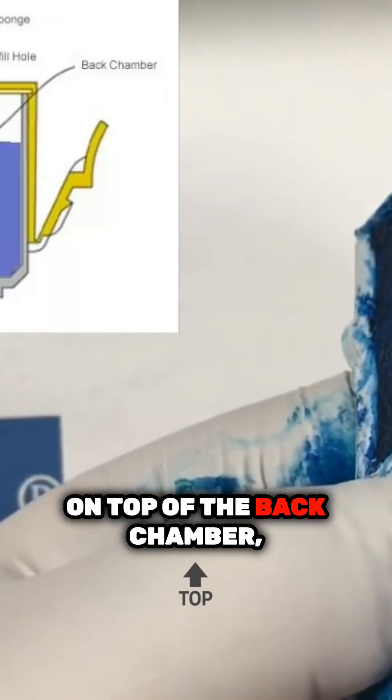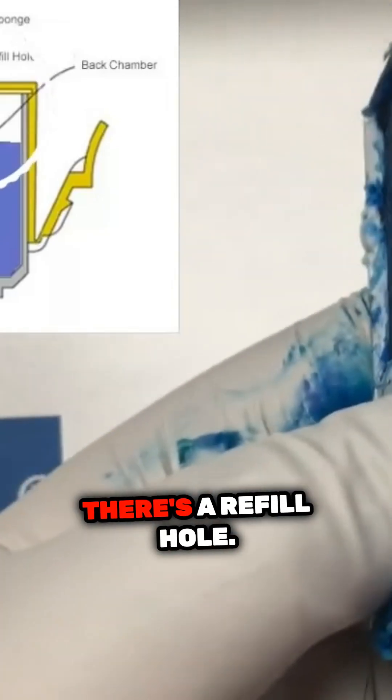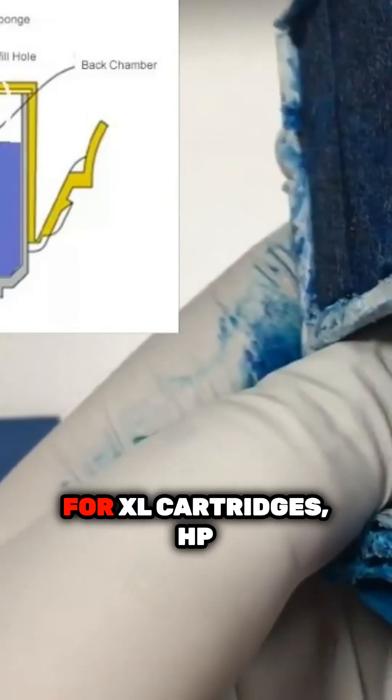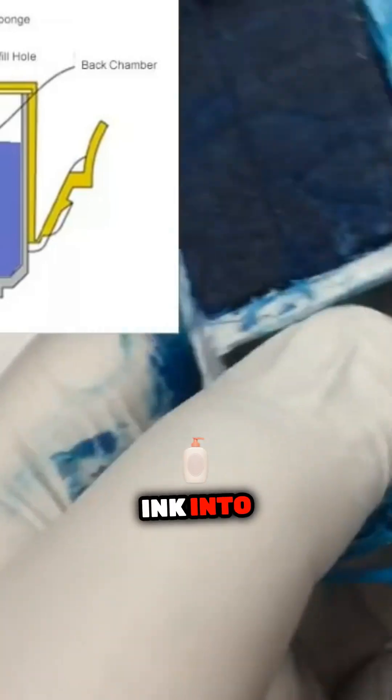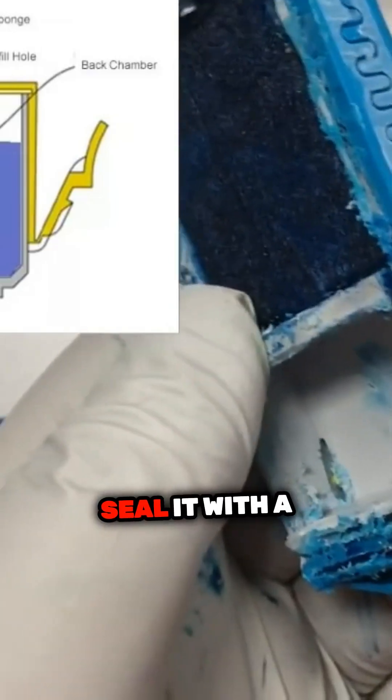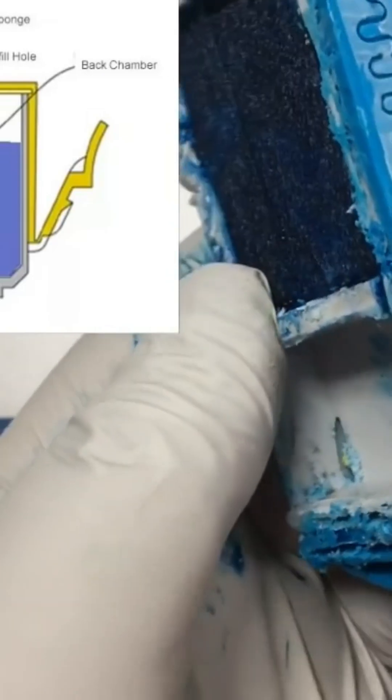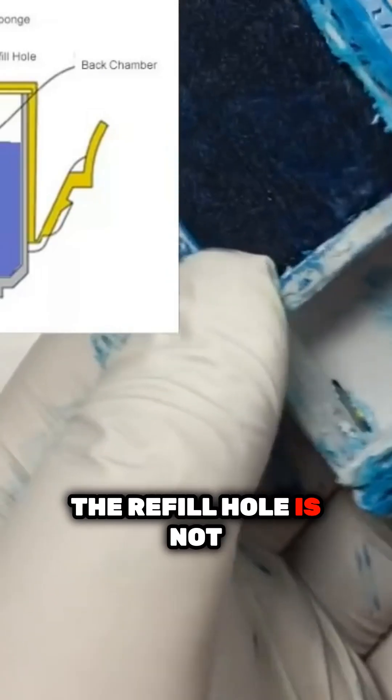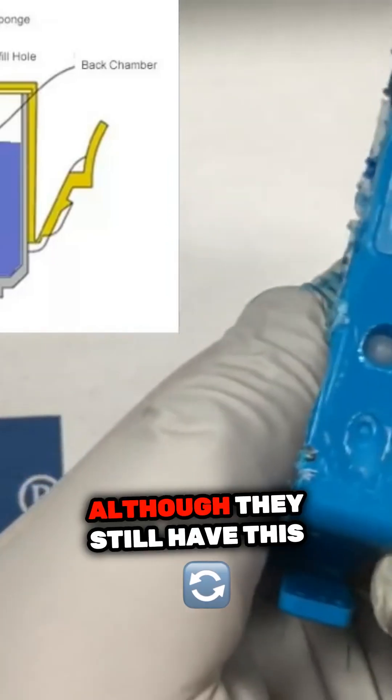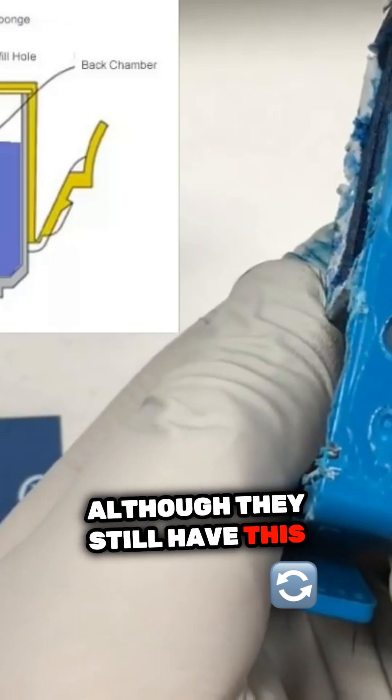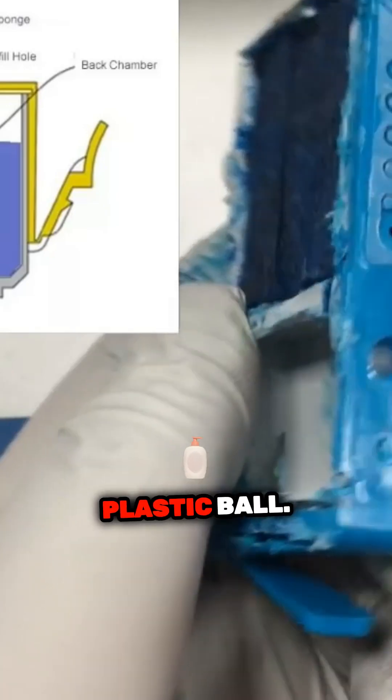On top of the back chamber, there's a refill hole. For XL cartridges, HP injects ink into this hole and seals it with a plastic ball. The refill hole is not used by regular or startup cartridges, although they still have this opening and the plastic ball.